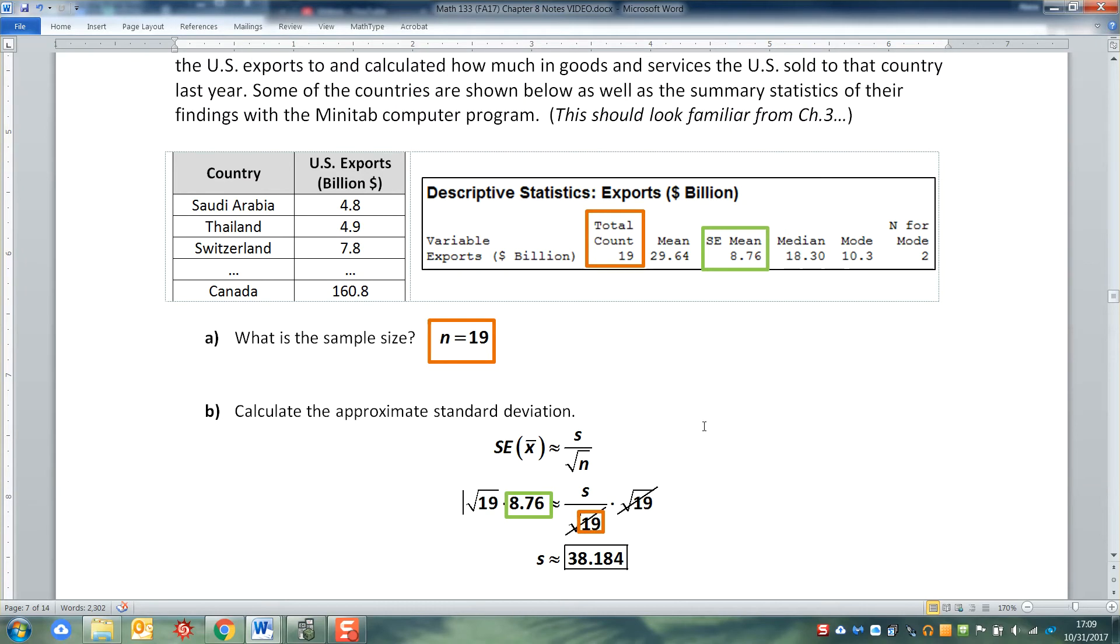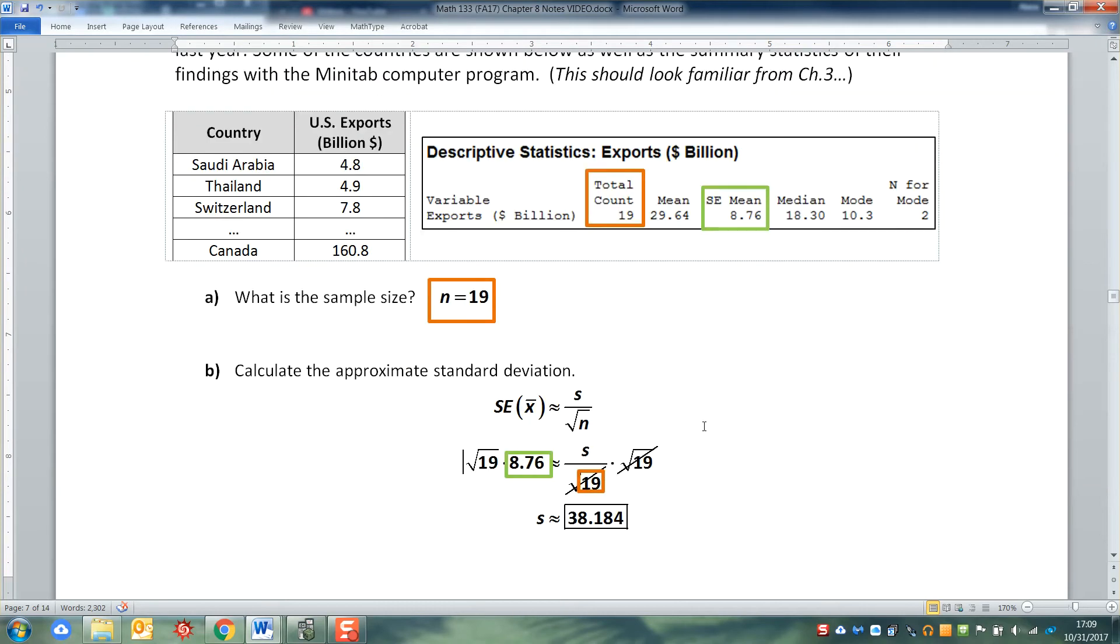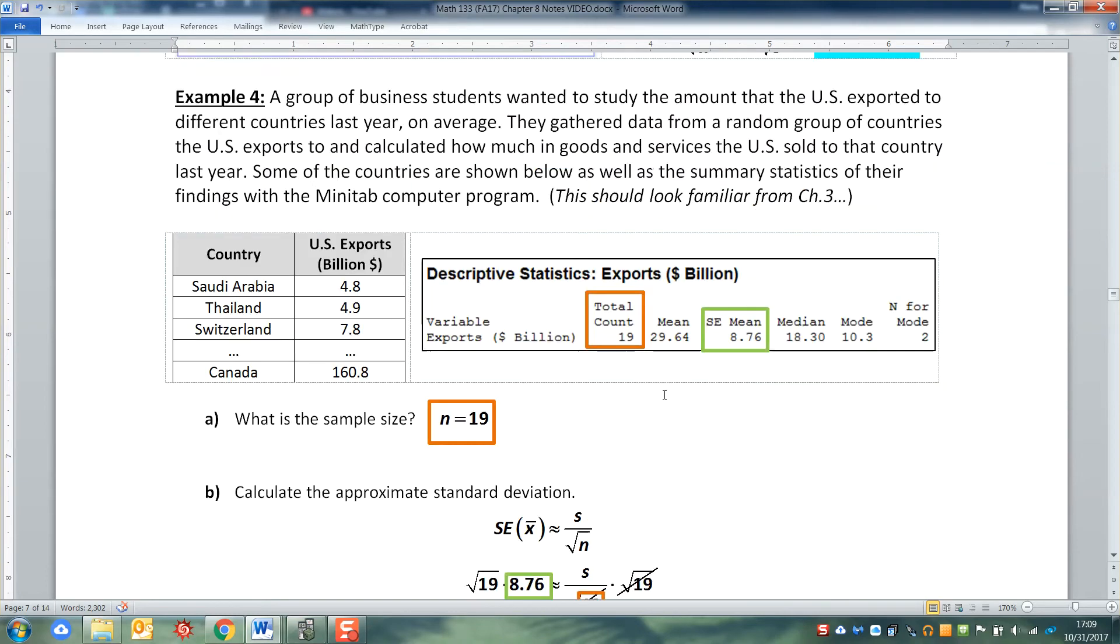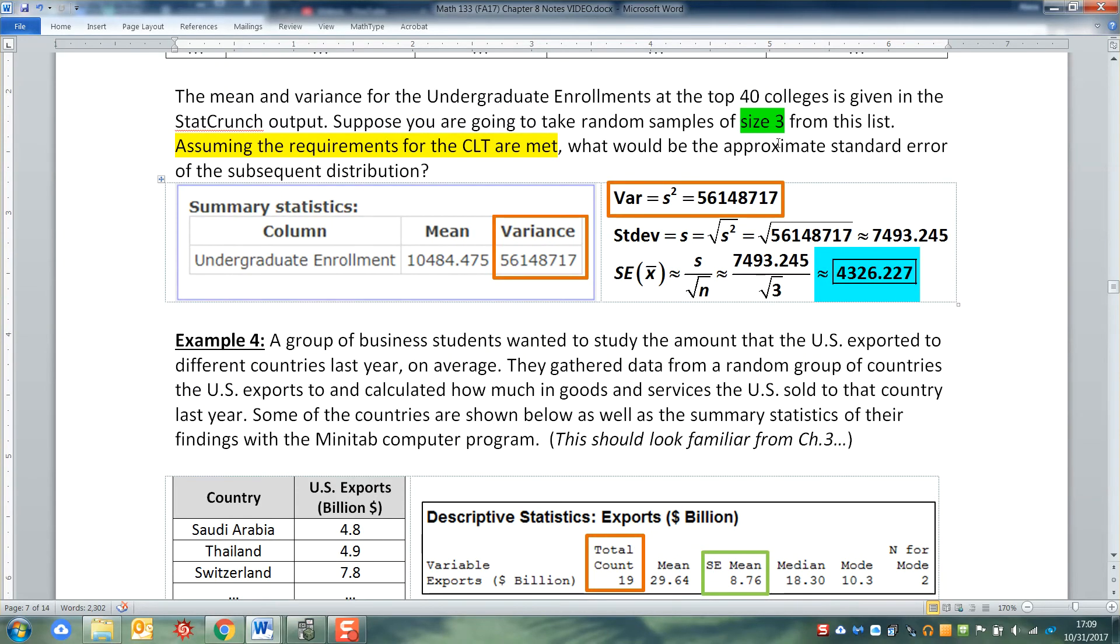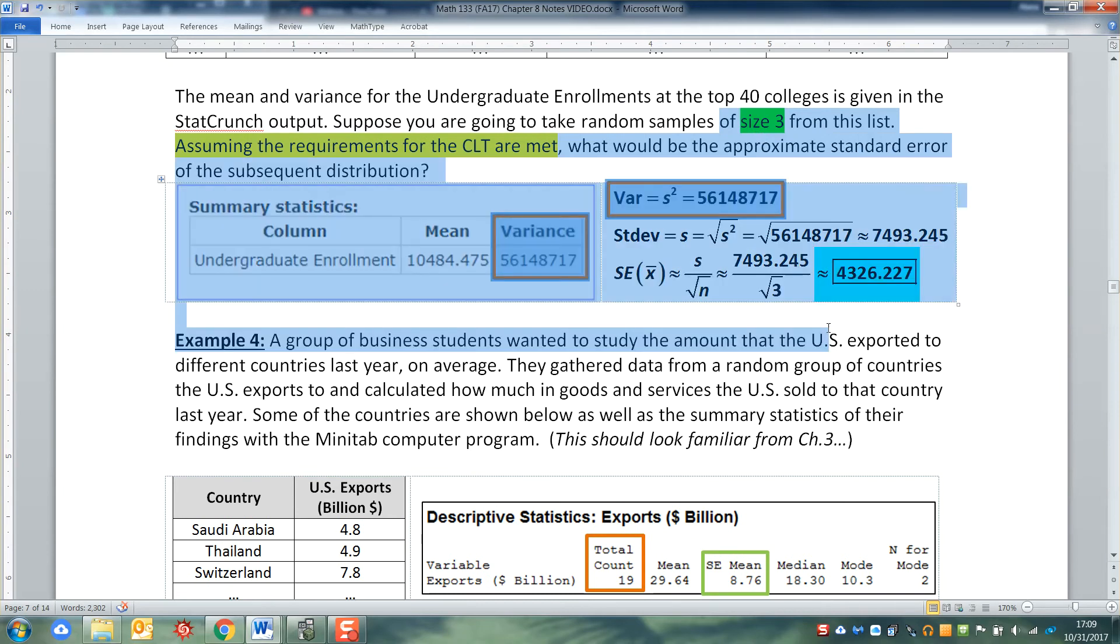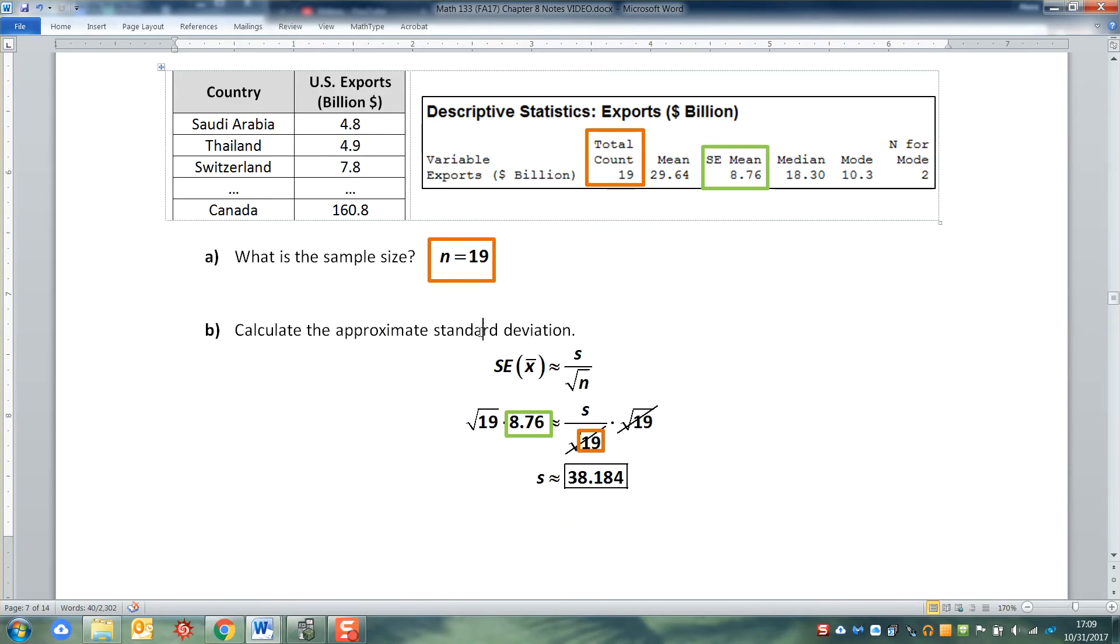So it's the opposite of what we did above. The one above, you got variance, variance gave you standard deviation, you just plugged in and you're done. And we knew sample size right from the problem. So that was a straightforward substitution. Example four, it's kind of backwards. You're using a little bit of algebra to solve for S. So you put in the numbers you know and solve for the S, which is the part you don't know.